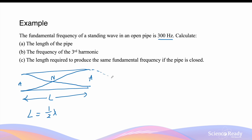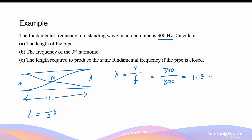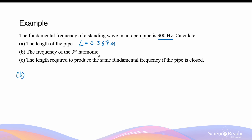From the shape of the standing wave, the length of the open pipe equals half the wavelength, since only half the standing wave fits inside. We can visualise this by extending the wave to see one full wavelength, of which only half fits in the pipe. To find the length, we first calculate the wavelength: λ = v/f = 340/300 = 1.13 m. Therefore, the length of the pipe = (1/2) × 1.13 = 0.567 m.